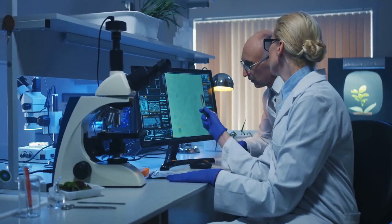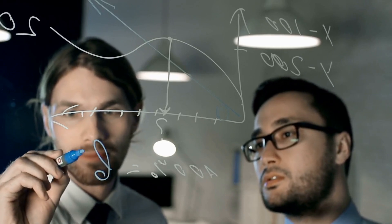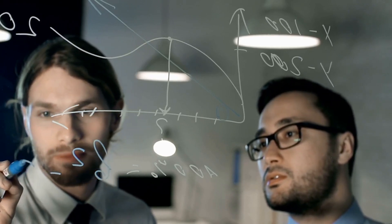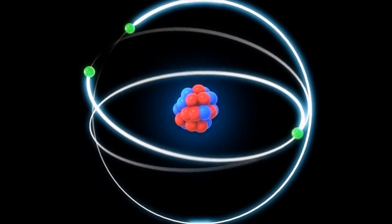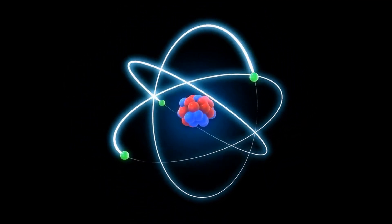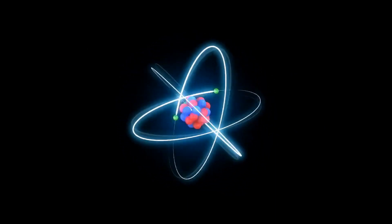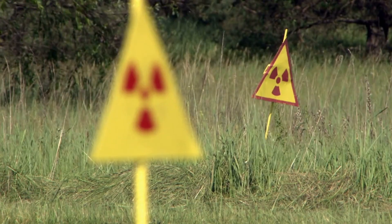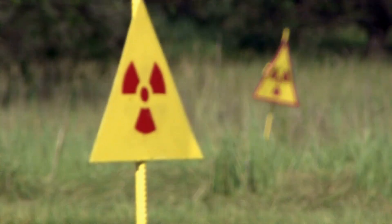The Science of Nuclear Explosions. To understand whether or not a nuclear explosion can destroy a planet, we must first understand the science behind nuclear explosions. A nuclear explosion occurs when the nucleus of an atom is split apart, releasing a tremendous amount of energy in the process. This energy is released in the form of radiation, heat, and a shockwave that can cause significant damage to the surrounding area.